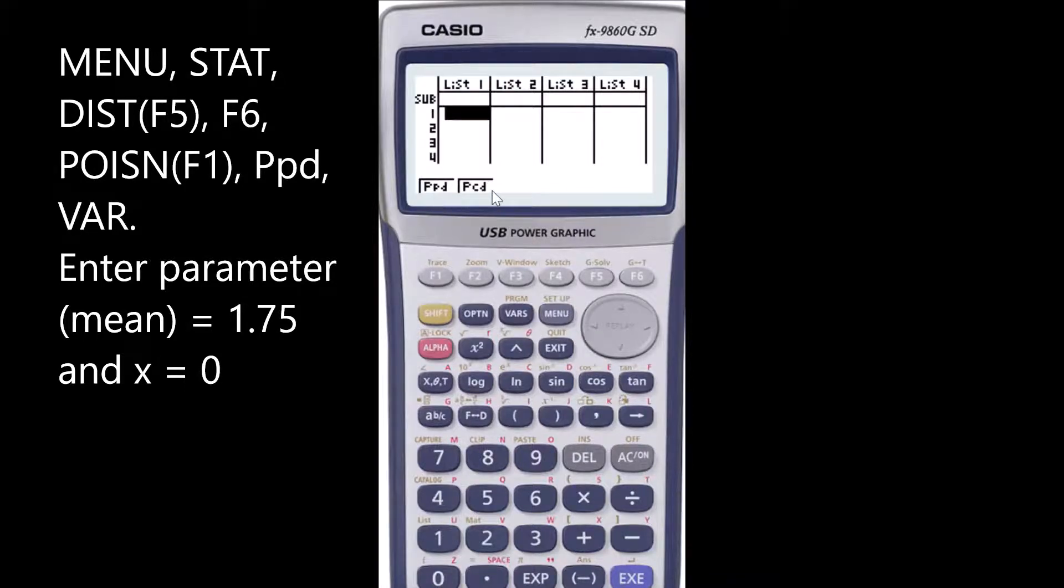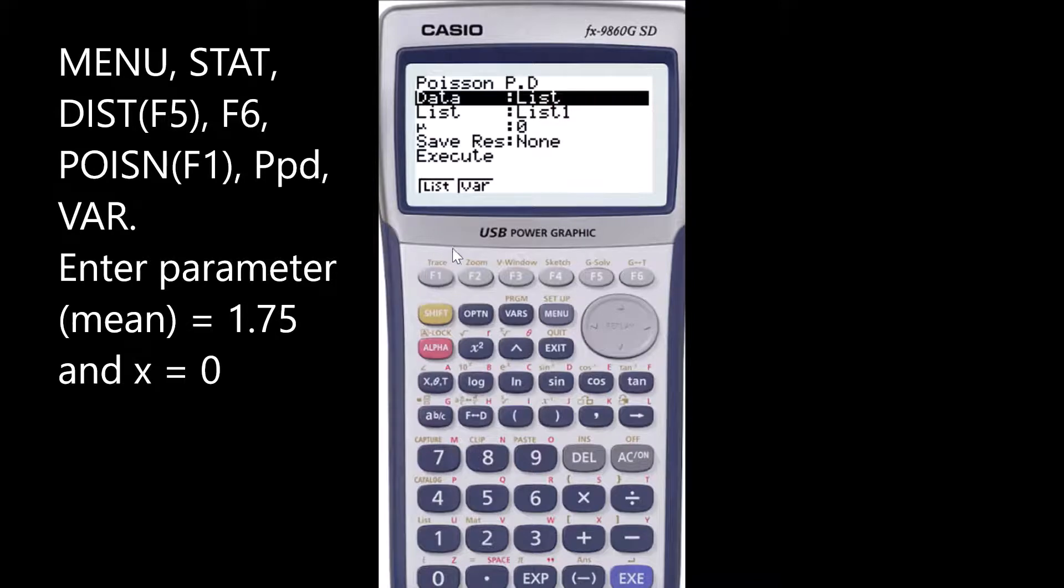I've got two options. In this case my X value is exactly zero, so I will use a point distribution, ppd. Then change data to variables so we've got a variable there, and then X value is zero in this case, so that's already there.